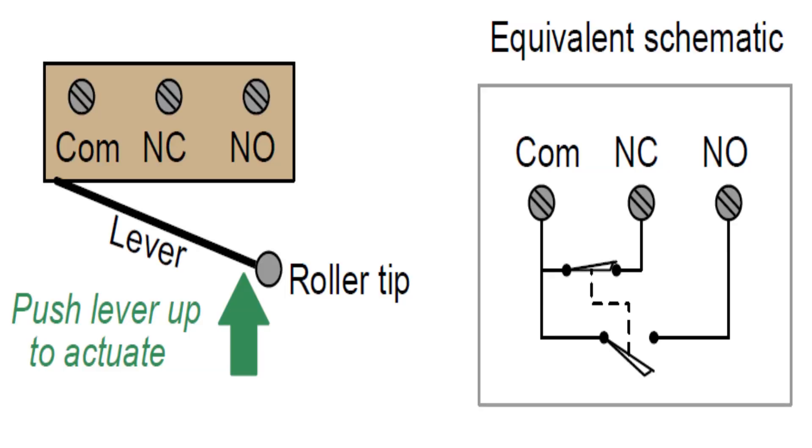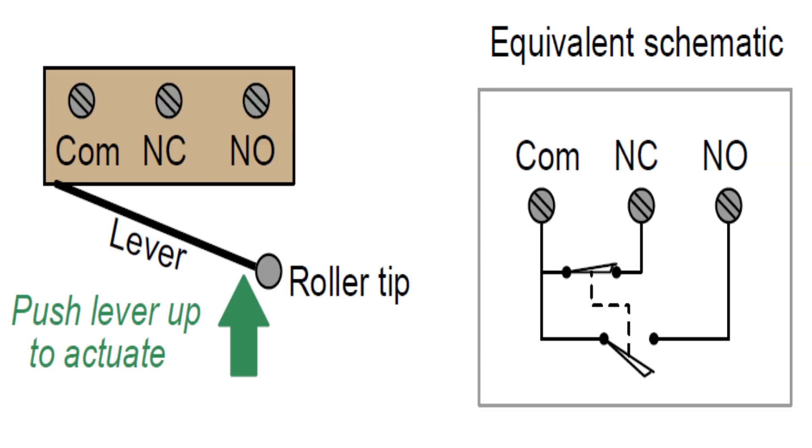We have NO/NC contacts. We have seen in previous videos — NO is normally open. In the normal case, we don't have output. That is why we have input and output. Now, for example, we have a door and a roller. We have limits to make. After we press the door, we will press the rotor.